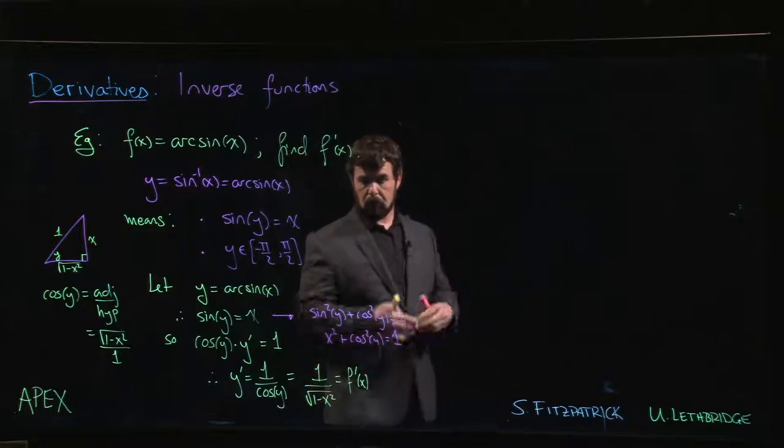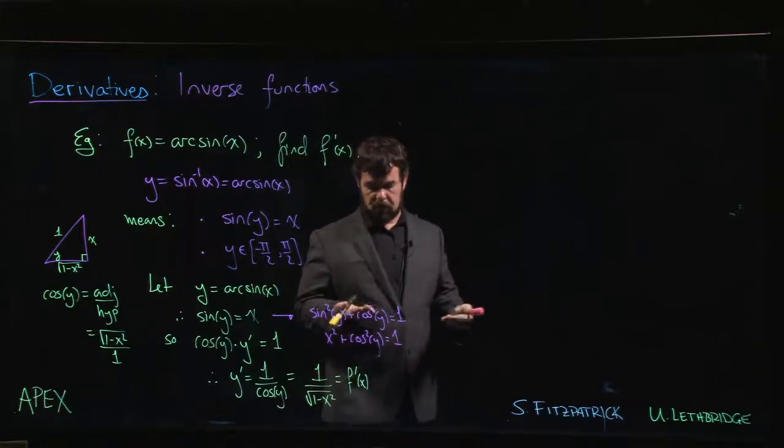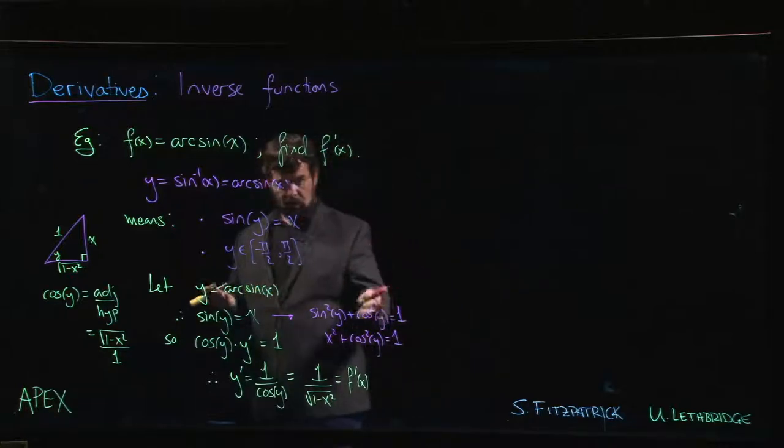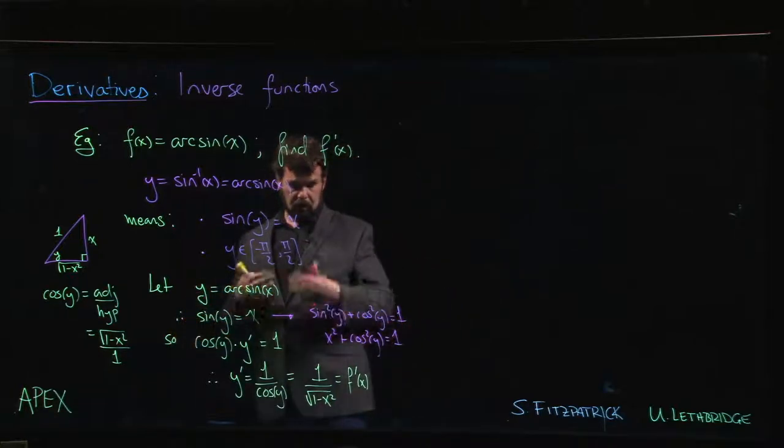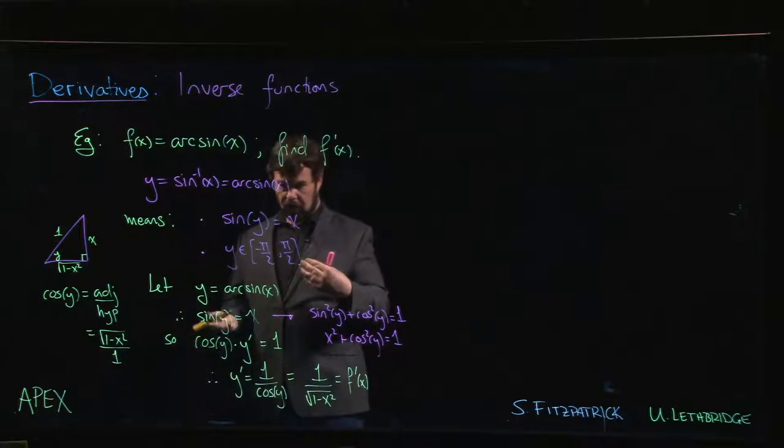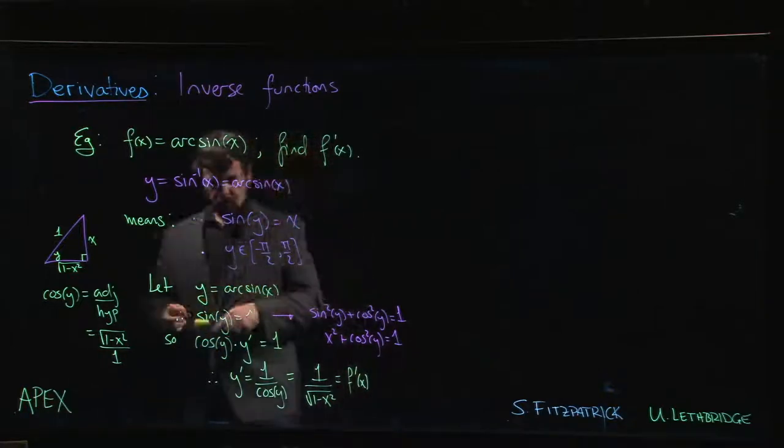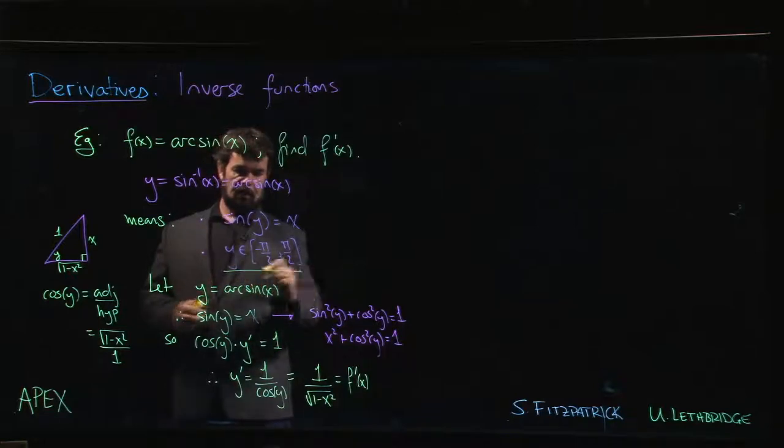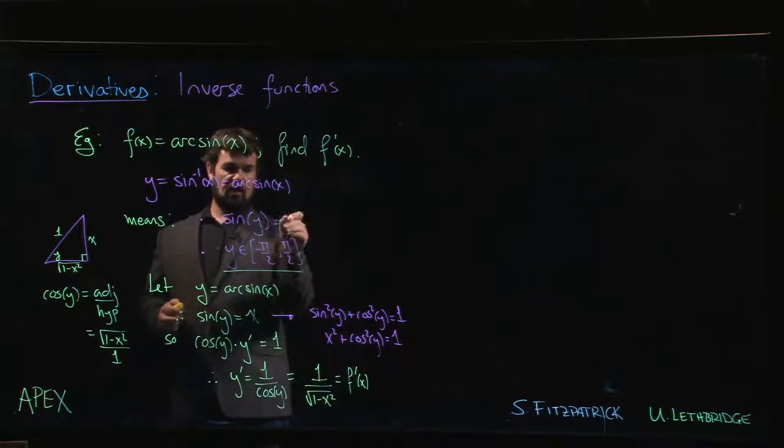So here we can solve for cosine y: bring the x squared over, one minus x squared, like you see down there. Then to solve, take square roots. And then you're probably wondering, when I take square roots there's a positive square root and a negative square root - how do I know which one to choose?